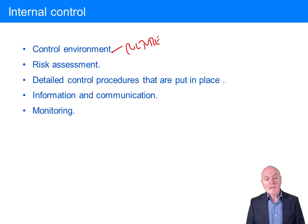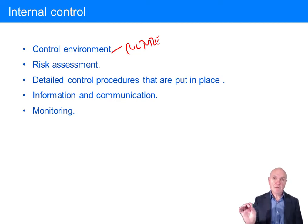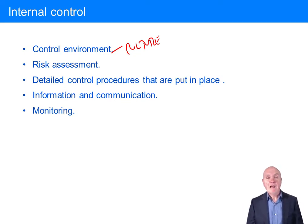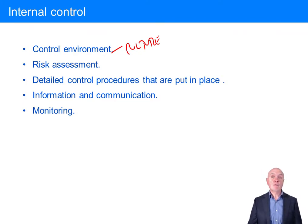You need detailed control procedures — it could be locking stuff away, making sure things are authorised, and so on. These are the detailed procedures to make sure internal control is working effectively.